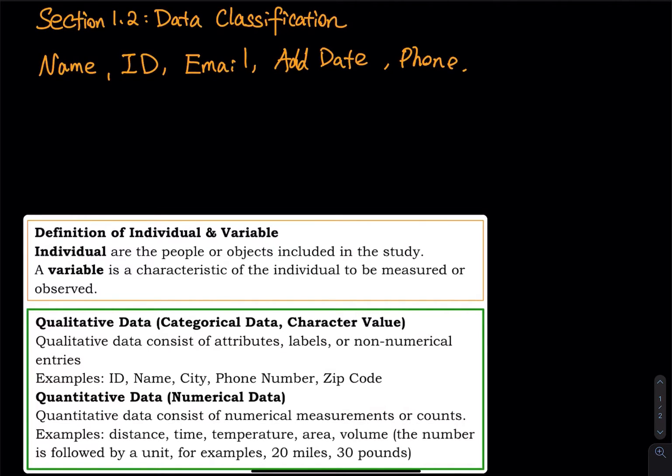Let's discuss what a variable is and what an individual is. They all go by a column - the first person's name, first person's ID, first person's email, the date, and the phone number. So the very first column in a spreadsheet, this column is a variable.